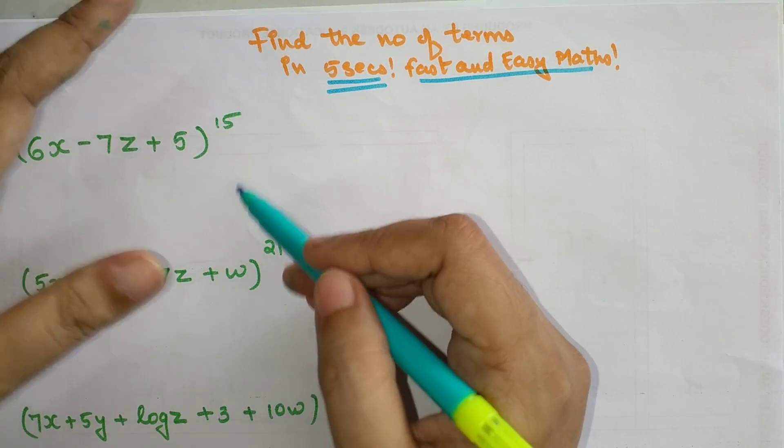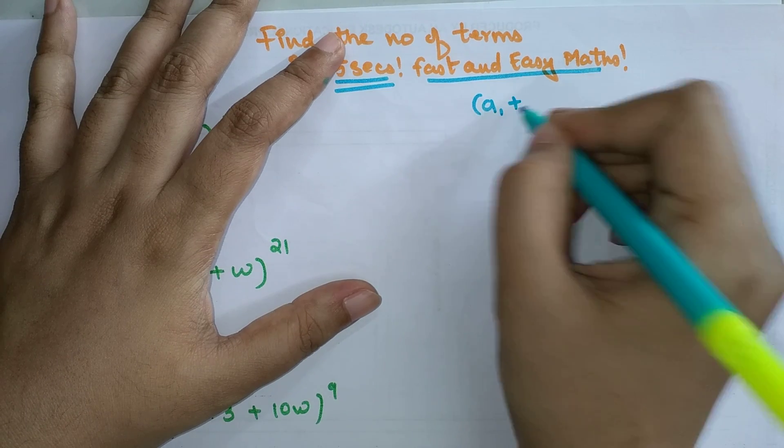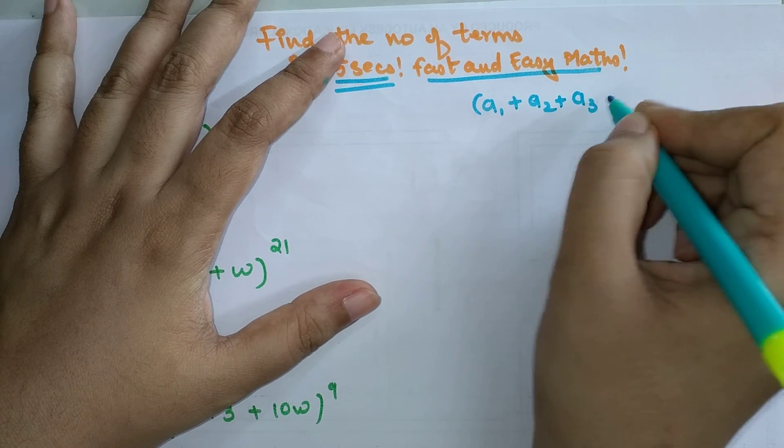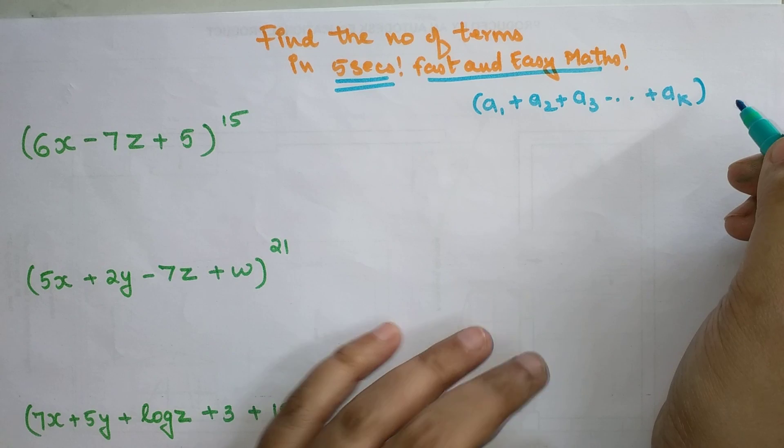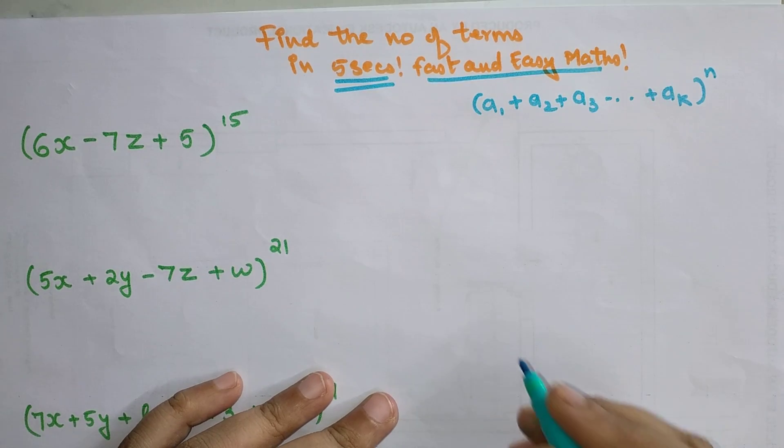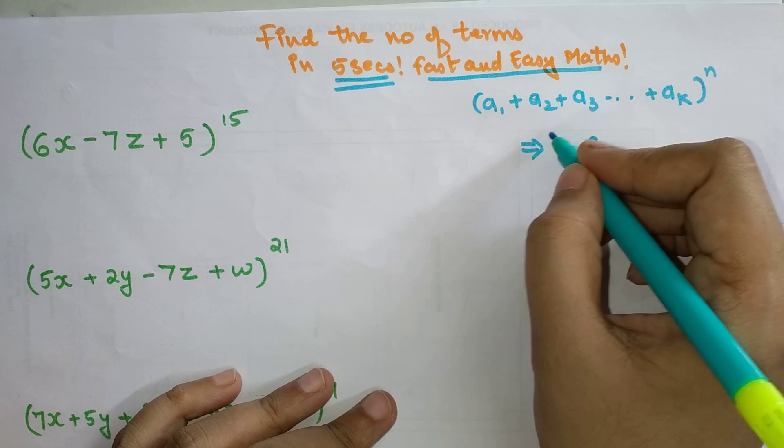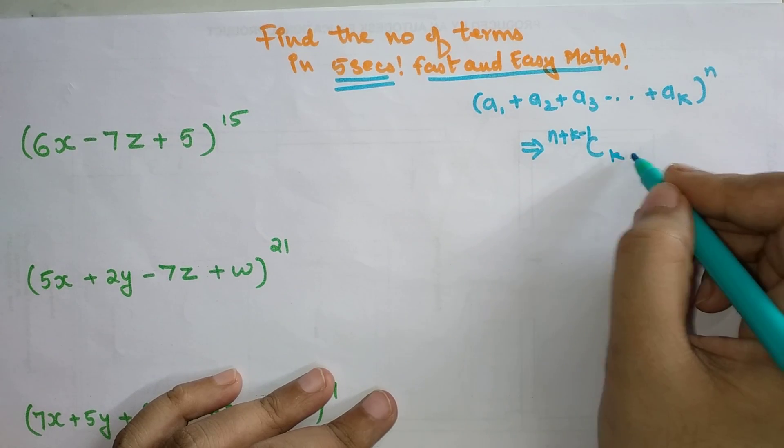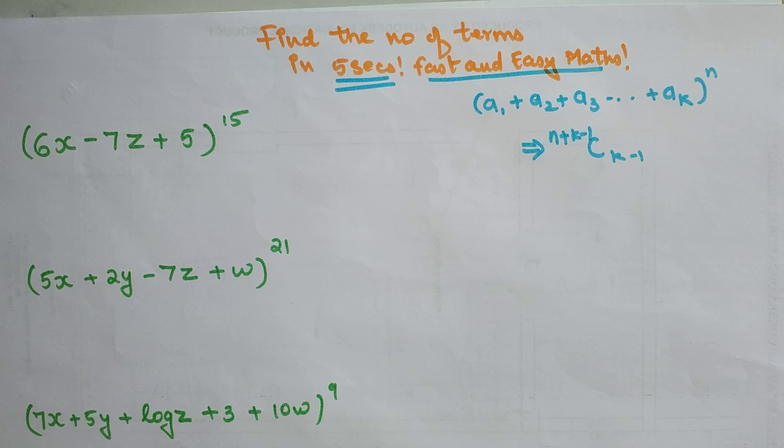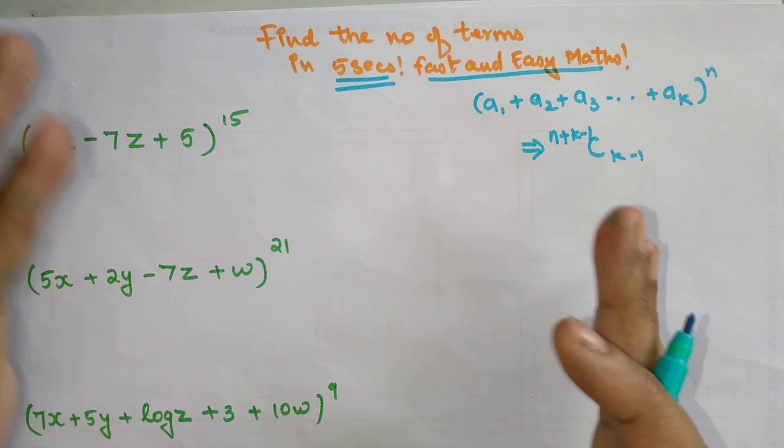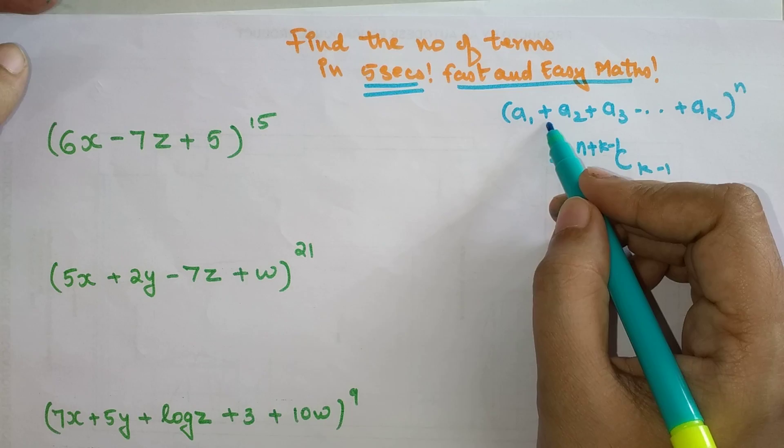Without wasting further time, let's understand. I'm not going to even look at this question. I'm just going to tell you the formula. If you have terms a1 + a2 + a3 going up to ak, and the whole raised to n, very simply you can just find the total number of terms as C(n+k-1, k-1). You can actually pause this video and start solving all of them. Before I forget, you really don't have to ensure that all of this is plus. You can have few terms as negative, few terms as positive, it doesn't matter.